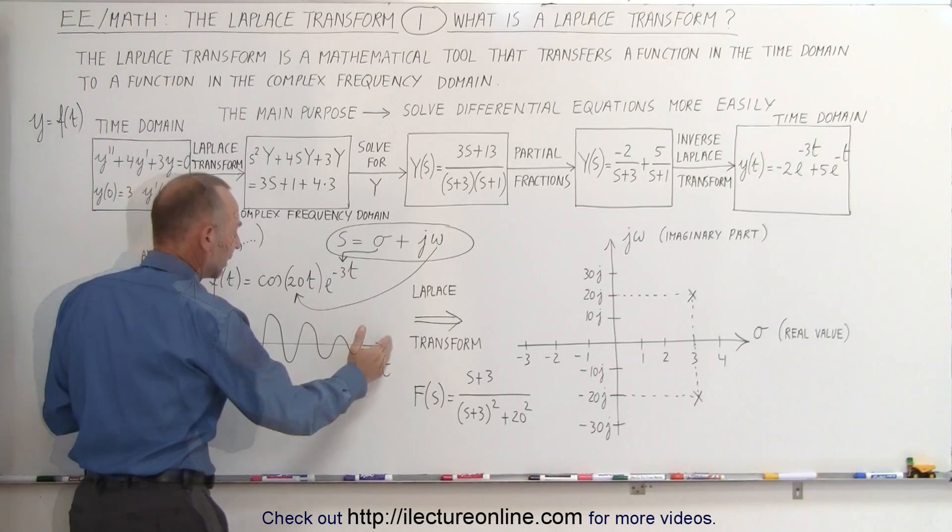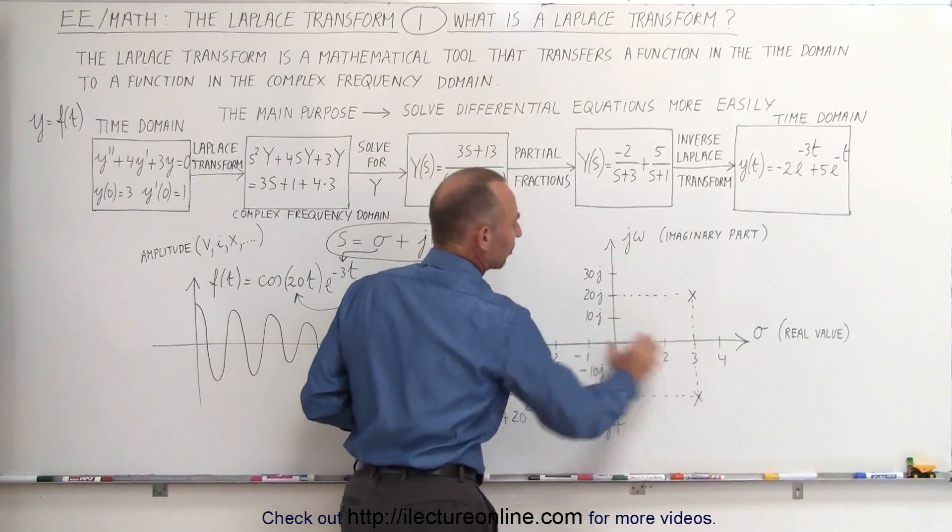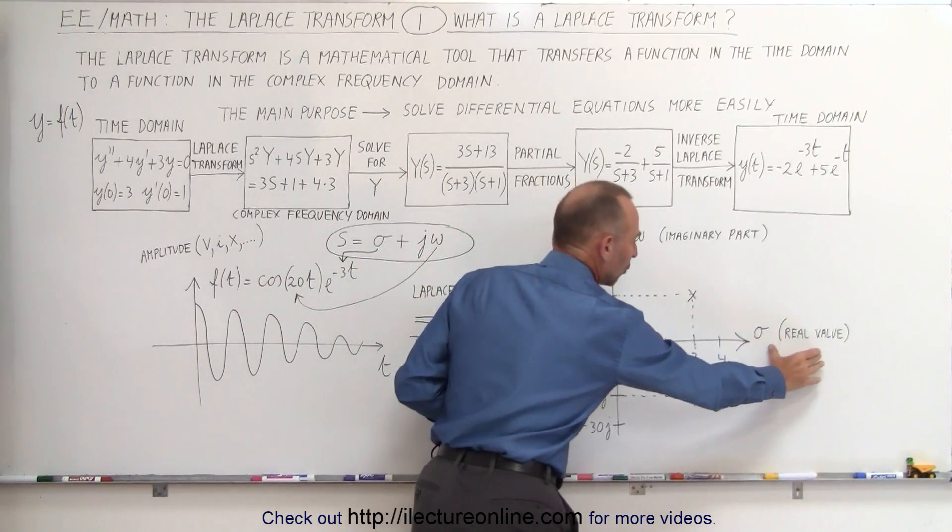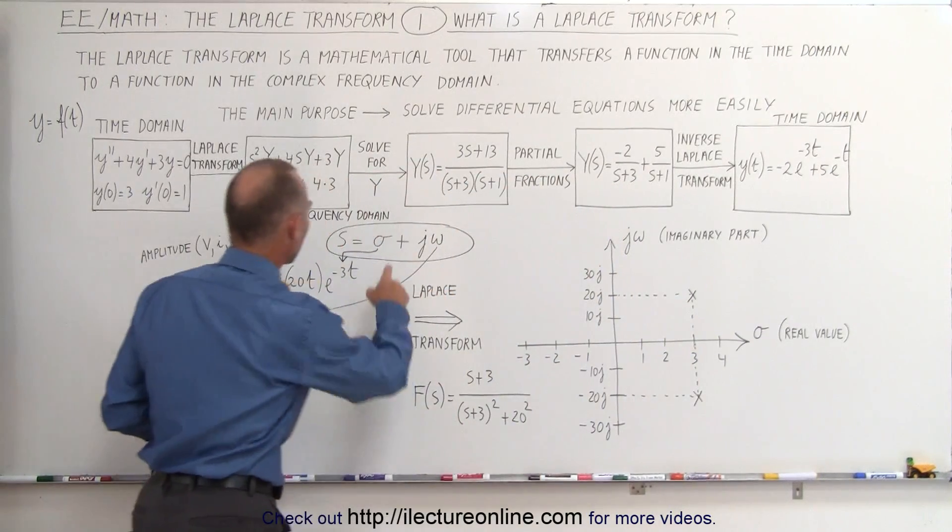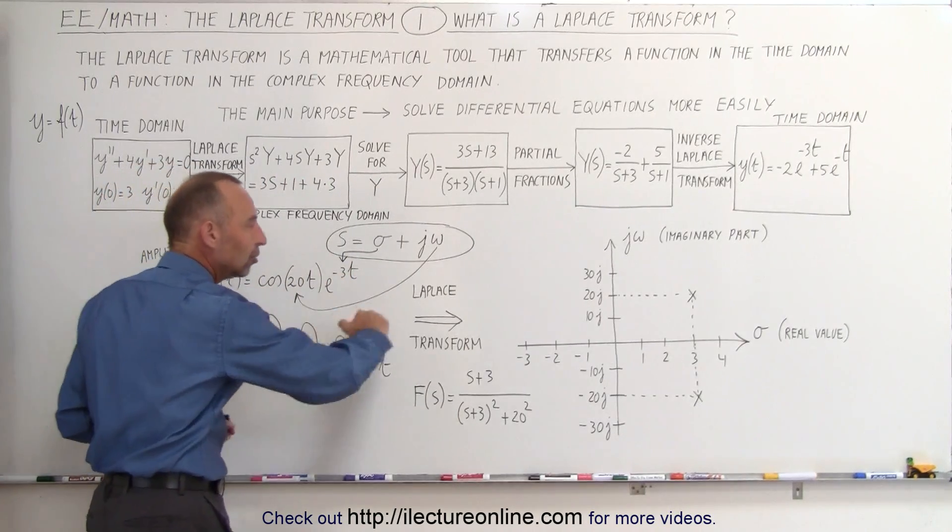And so this can then be represented in what we call the complex frequency domain. Notice the real part is on the horizontal axis, the real value right here. And remember that the real value is associated with how fast the amplitude is decaying.